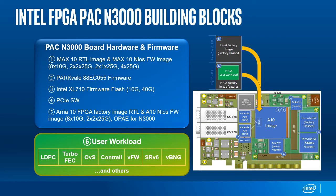Here's another look at the different building blocks within an Intel FPGA PAC N3000. There are components within the platform for which Intel provides the software and firmware, specifically the Max 10 RTL image and Max 10 NIOS firmware, XL710 firmware, Arria 10 FPGA factory image, and Arria 10 NIOS firmware. The users of the PAC N3000 platform can program it to run a number of user workloads, which can either be designed in-house or licensed from ISVs and TEMs that have developed workloads on the PAC N3000.